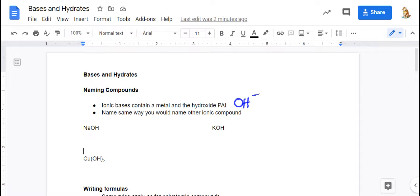So the formula, you identify the metal. It comes first in the name and then you follow it up with the polyatomic ion. So sodium hydroxide. KOH. K is potassium. So this is potassium hydroxide.